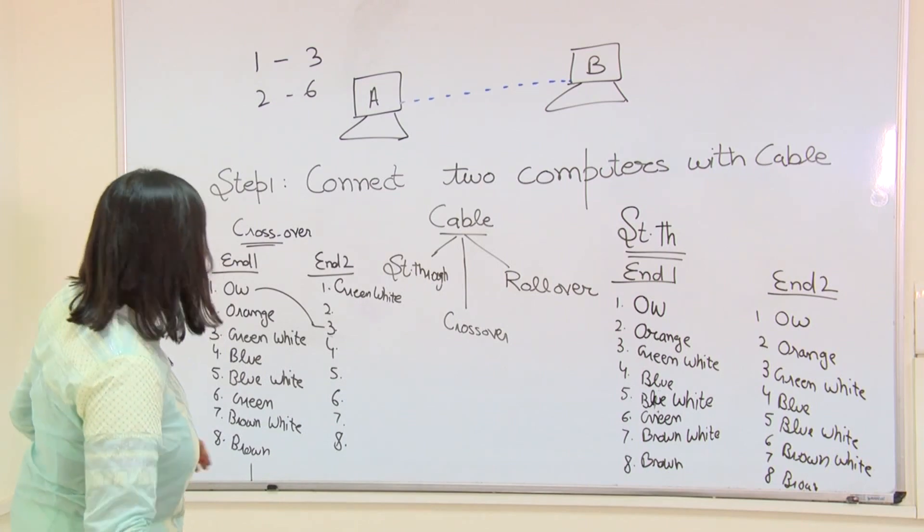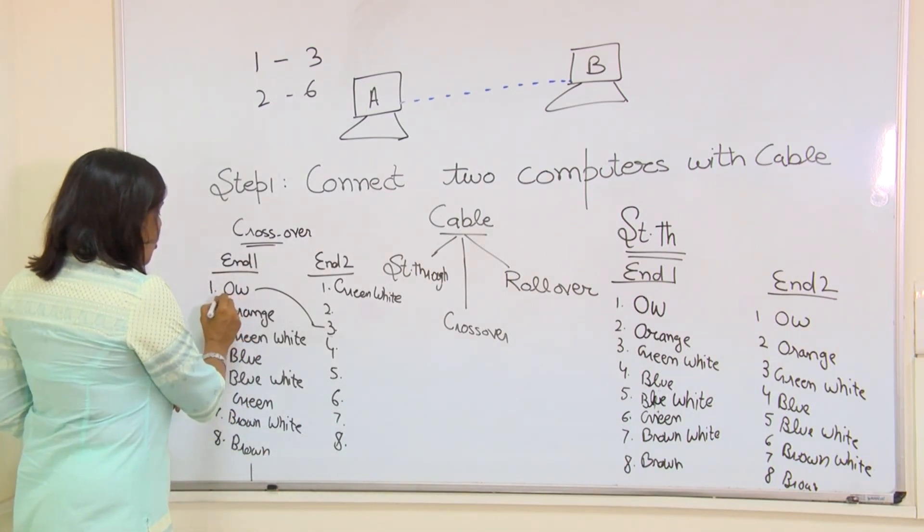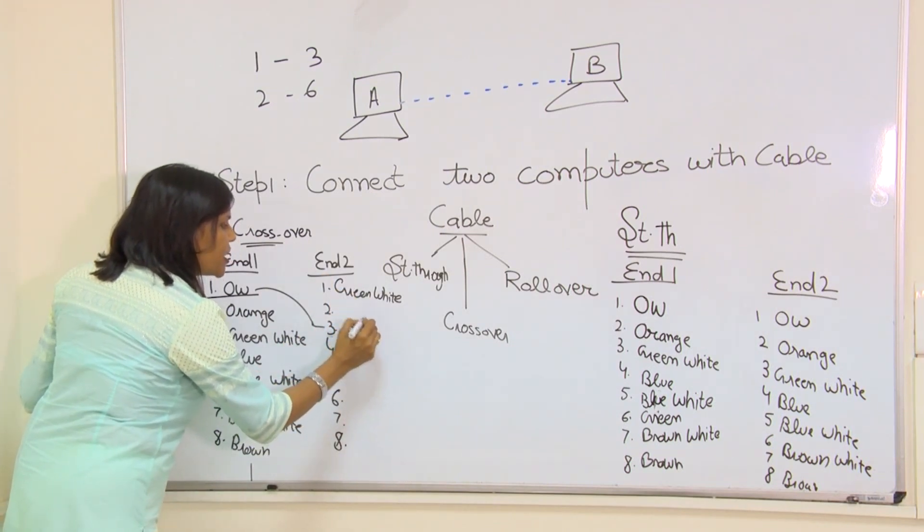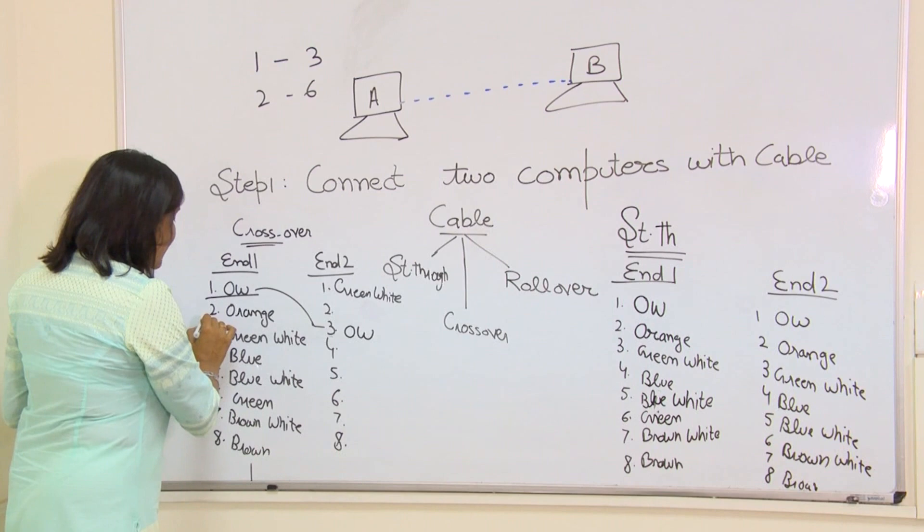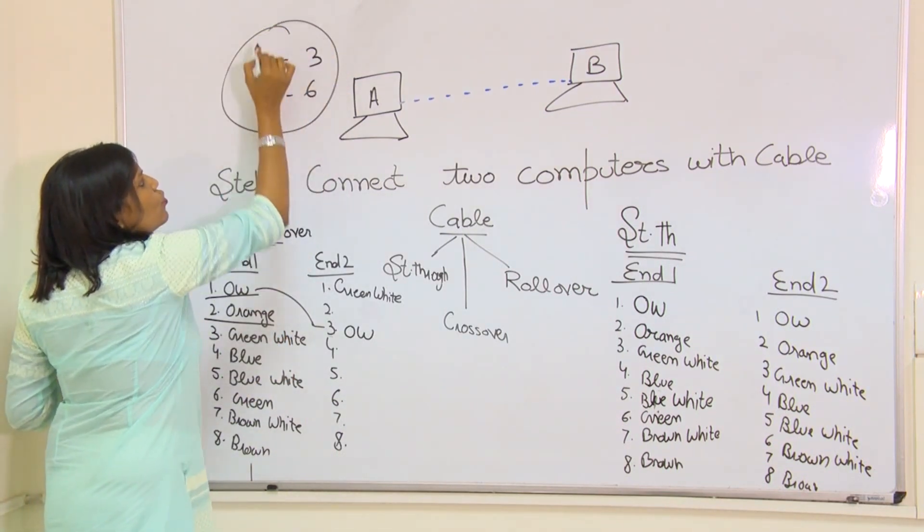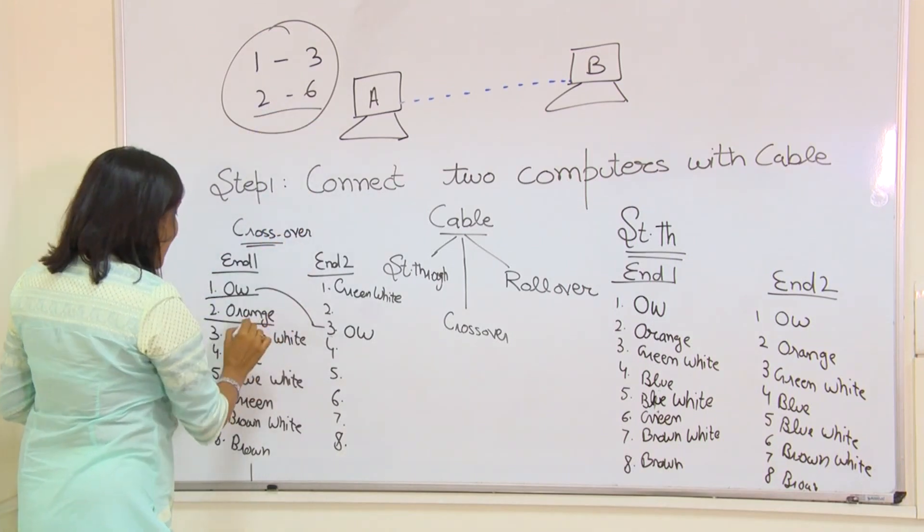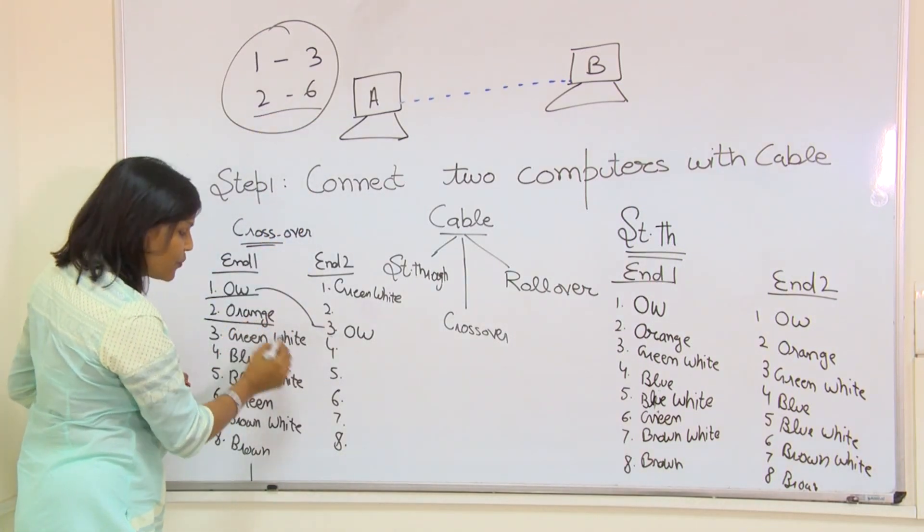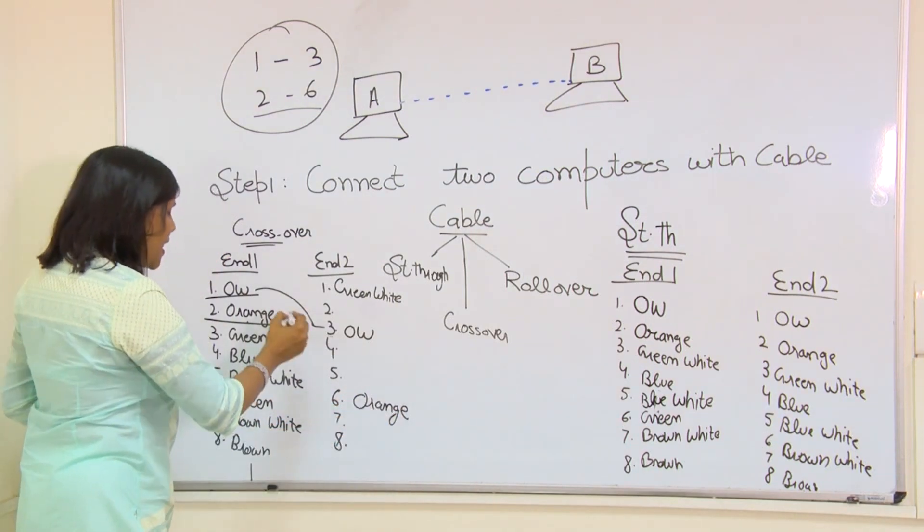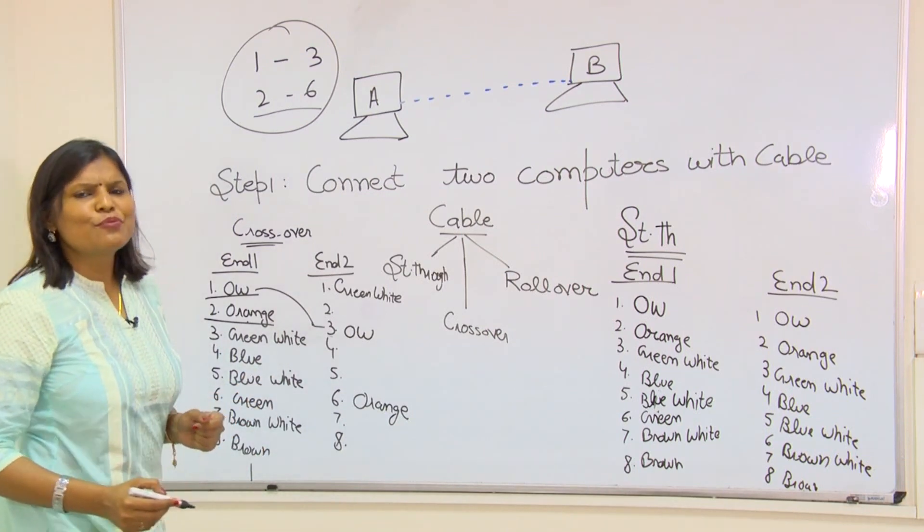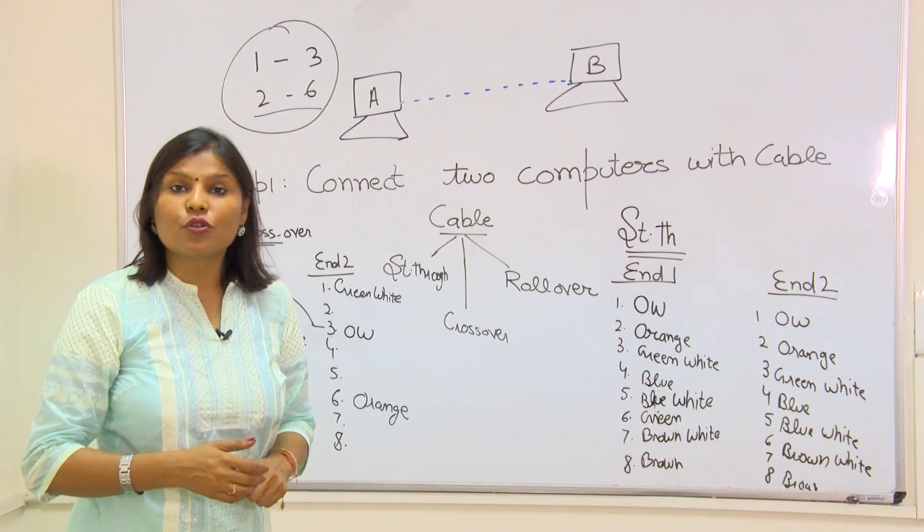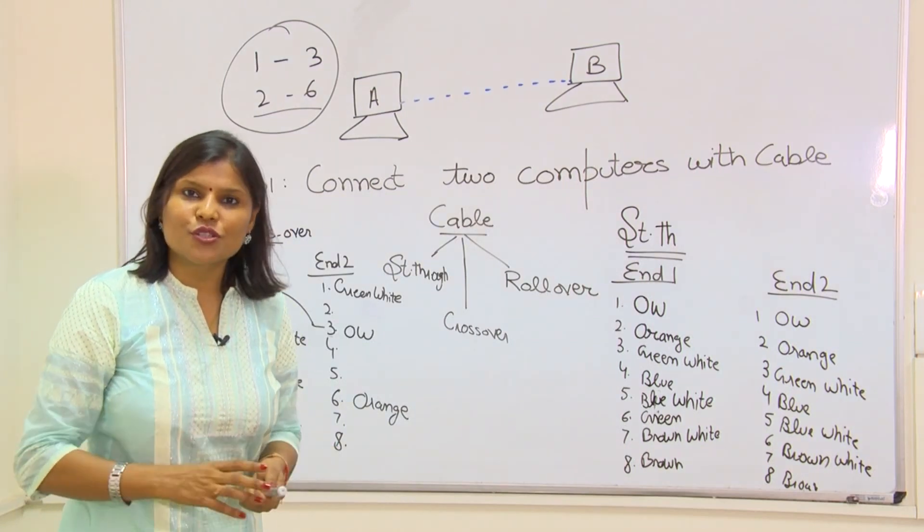And similarly, you can see here also, I have written the word orange white on the first position. On the second end, I will take orange white at the third position. If I am taking second position on the orange here, I have to follow this rule, that is 2, 6. I have to take orange at the sixth position here. No need to worry about the positions 4, 5, 7 and 8. If we are going to follow this rule, this is called crossover cable.